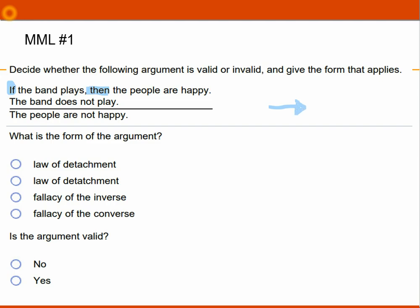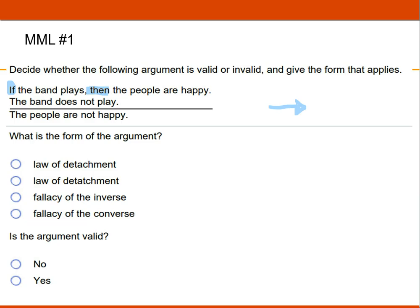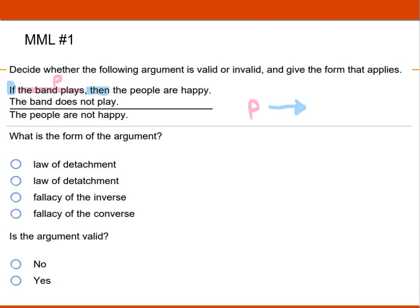That's your arrow for the if then. And then I'm going to let the band plays be the letter P. So if P, then I'm going to let the people are happy be represented by Q. So that first premise is if P then Q.